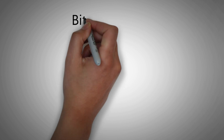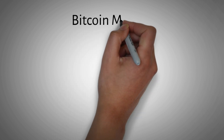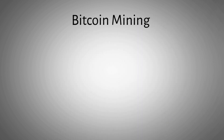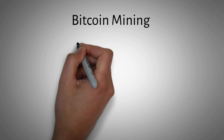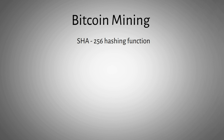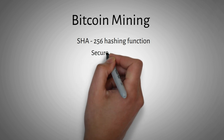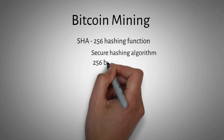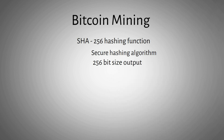In Bitcoin, miners approve transactions by solving complex math problems to generate the correct hash. The hashing function used in Bitcoin is SHA-256. SHA stands for Secure Hashing Algorithm, and 256 refers to the output bit size. The input can vary, but the output is always a 256-bit size.